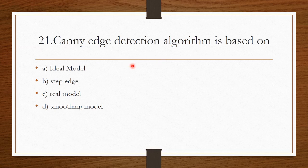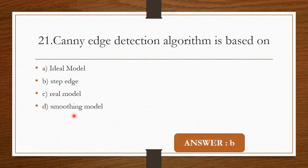Question 20: Canny edge detection algorithm is based on — Option A: Ideal model. Option B: Step edge. Option C: Real model. Option D: Smoothing model. The correct answer is Option B — Step edge.